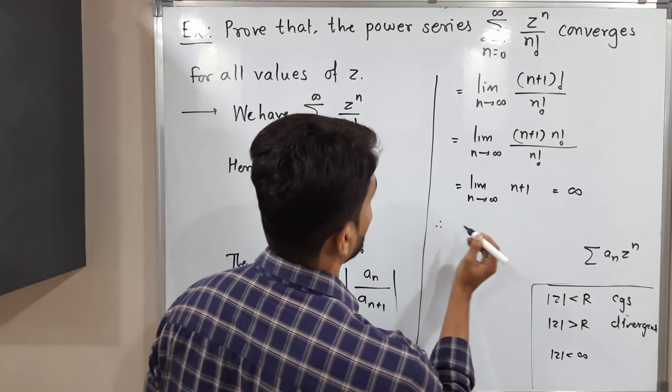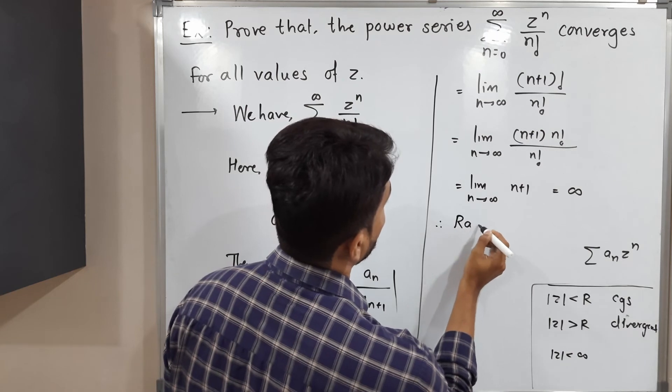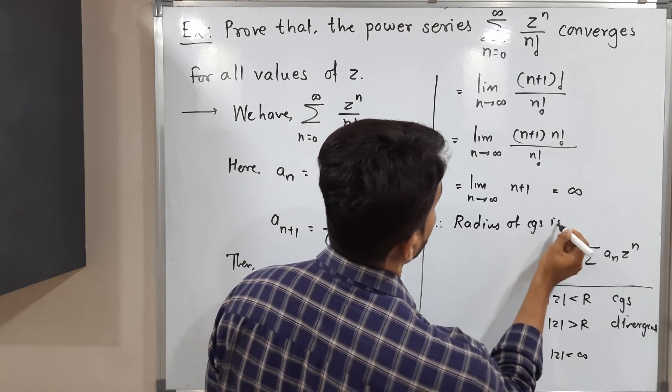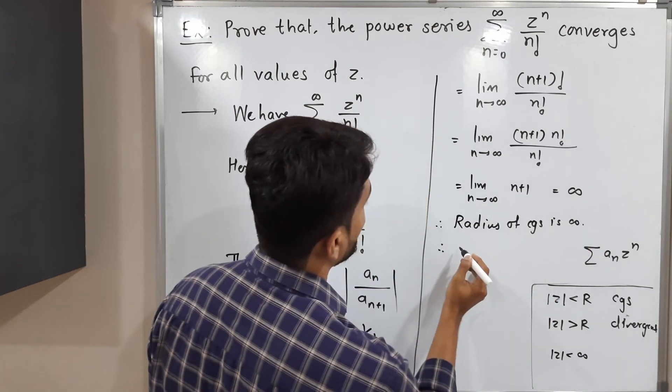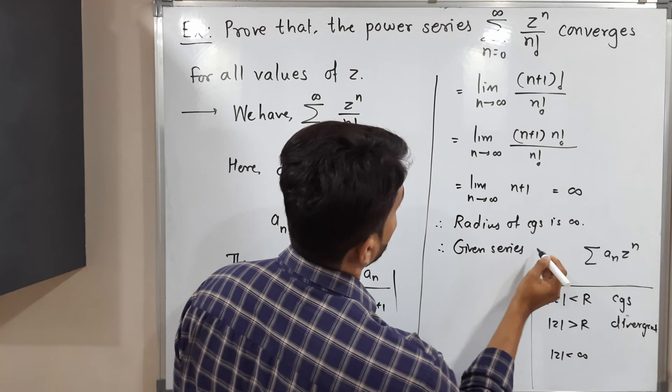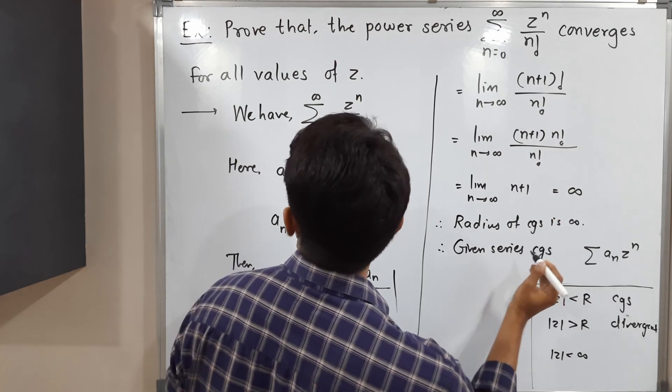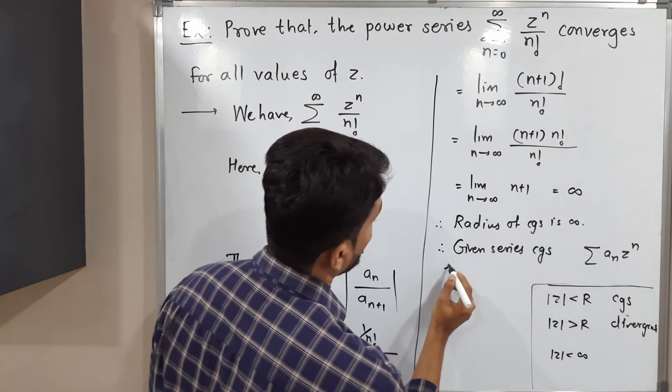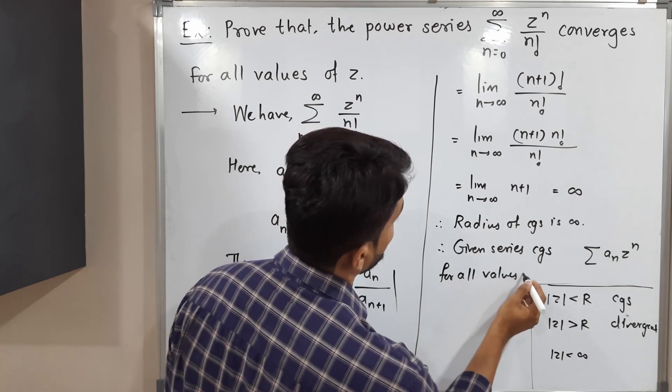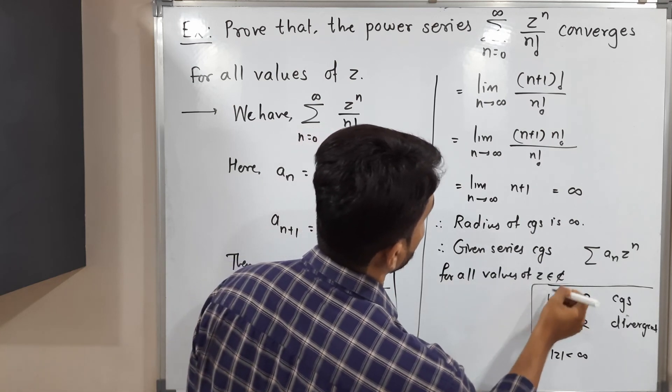Therefore, radius of convergence is infinity. So therefore the given series converges for all values of z. All values of z belongs to C.